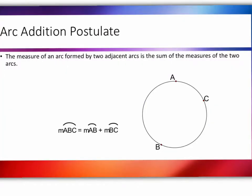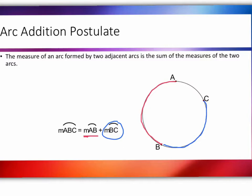We've learned the formal definitions of central angle, minor arc, major arc, and semicircle. Now let's use the arc addition postulate. The measure of an arc formed by two adjacent arcs is the sum of the measures of the two arcs. So the measure of arc AB plus the measure of arc BC equals the measure of arc ABC. This reminds us of the segment addition postulate, but now applied to arcs and circles.